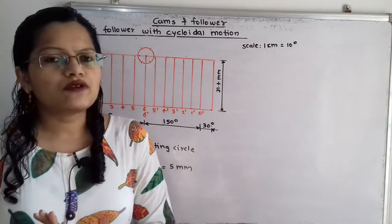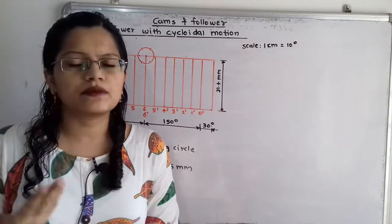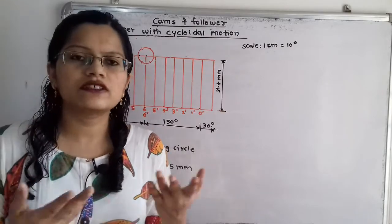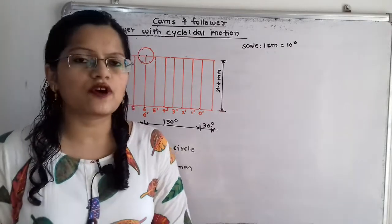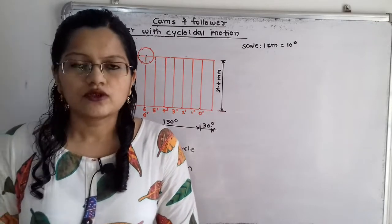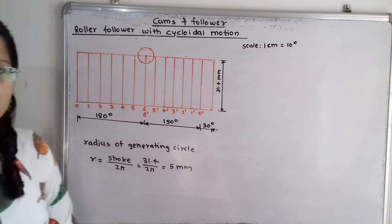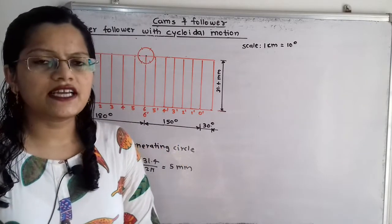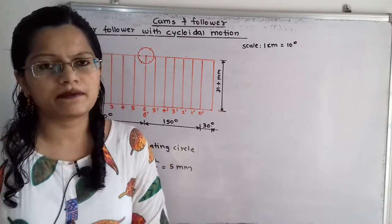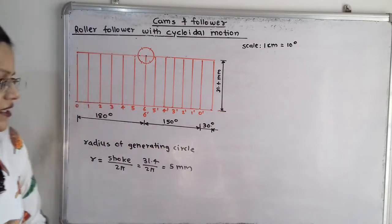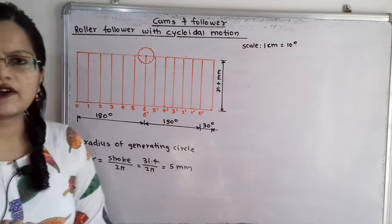Now we have to make equal parts. We will select 6 equal parts for both the outstroke and return stroke. The total outstroke distance is 18 cm, so 18 divided by 6 gives each part equal to 3 cm. We will make 6 equal parts and number them starting from 0.